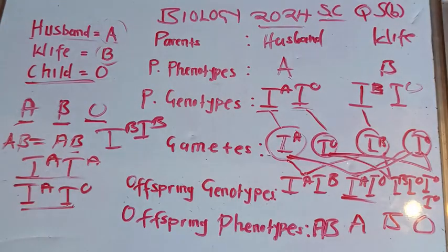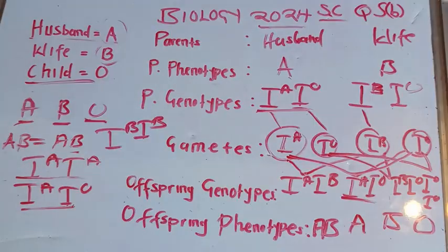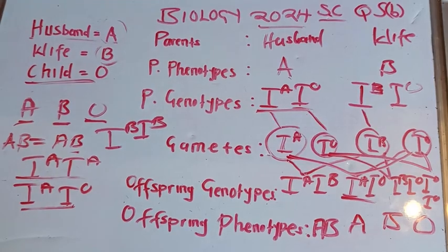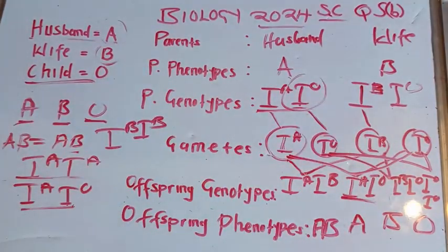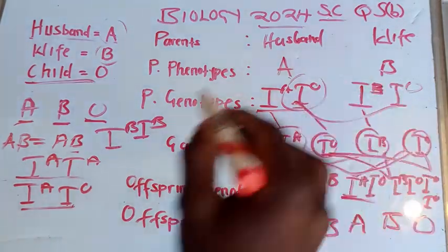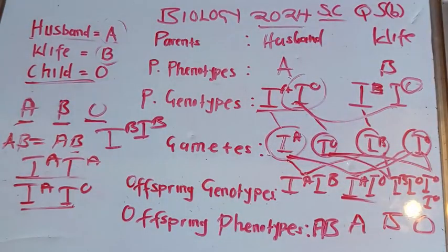To summarize: the allele for blood group A is dominant, the allele for blood group B is dominant, and the allele for blood group O is recessive. For parents to have a child with blood group O, both parents must have heterozygous blood groups — because the recessive O allele can only show up when combined with another recessive O allele.